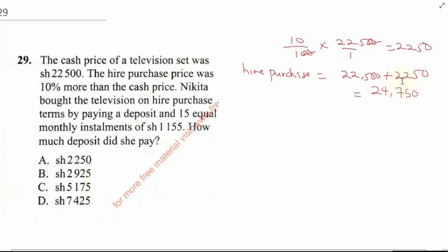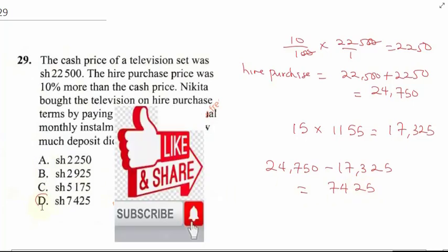Now let's get the amount he has paid. He paid 15 equal installments of 1,155. When you multiply these two numbers, you get 17,325. To get the first initial deposit, we do 24,750 minus 17,325, which gives us 7,425. The final answer here is D.